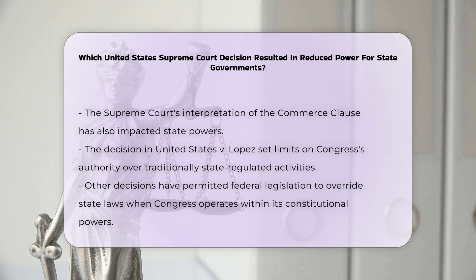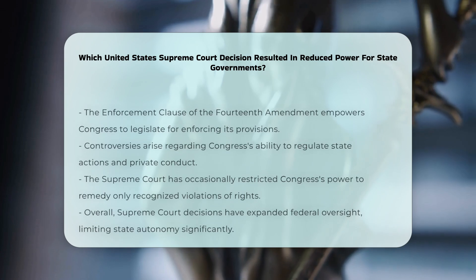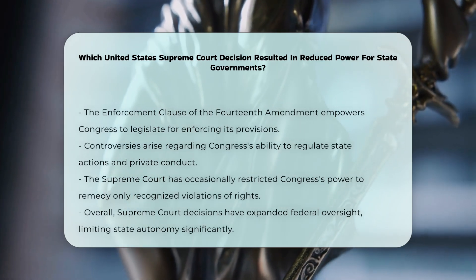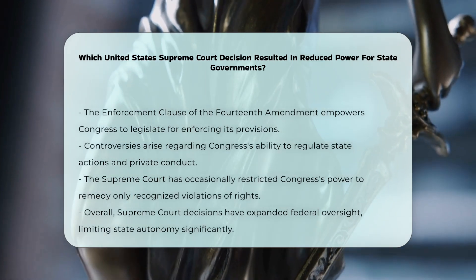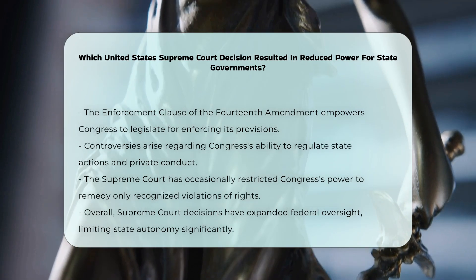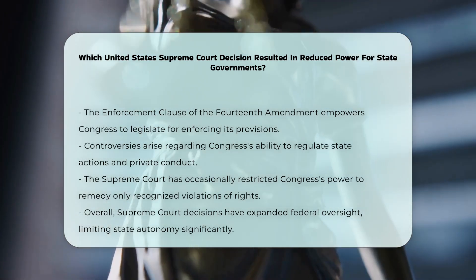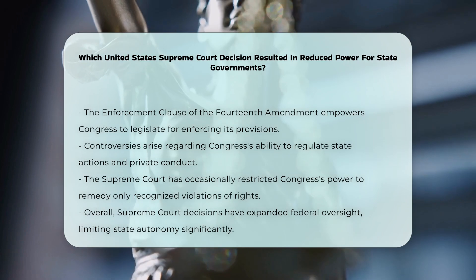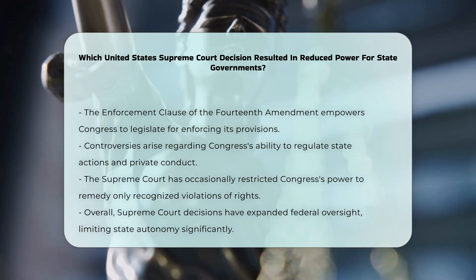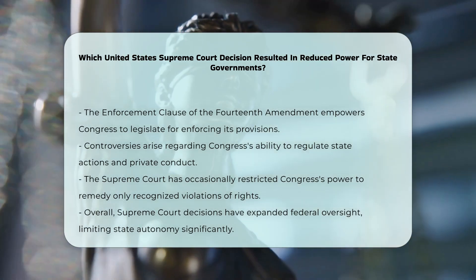The Enforcement Clause of the Fourteenth Amendment, Section 5, grants Congress the authority to enact legislation to enforce the amendment's provisions. This has led to controversies over the extent to which Congress can regulate state actions and private conduct, with the court sometimes limiting Congress's power to only remedying violations of rights already recognized by the courts.